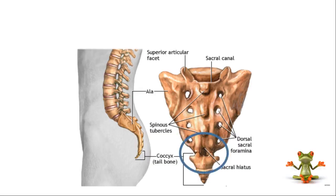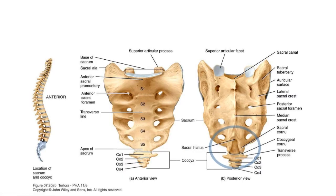This is the sacral cornu, the sacral hiatus between the two sacral cornua, and this is the coccyx. This is the place where we actually enter through the caudal epidural space at the sacral hiatus. In most adults, it is not possible to identify both cornua in a single individual, so the variability is considerable.